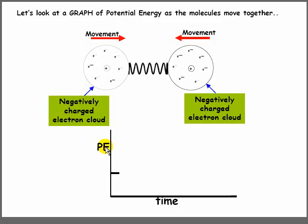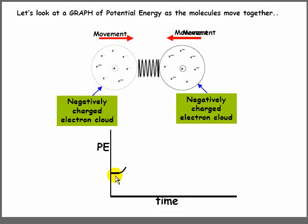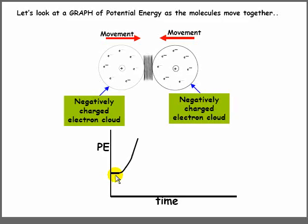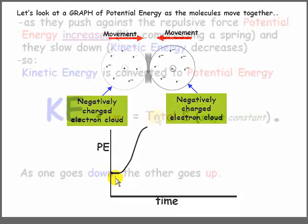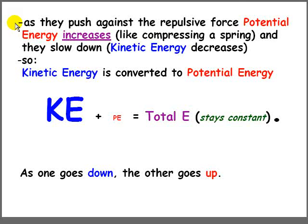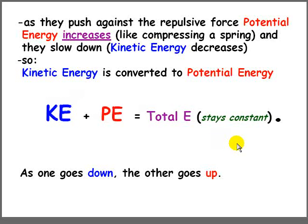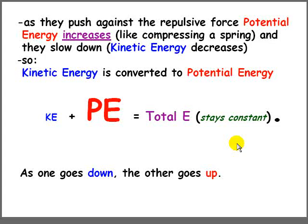If we look at a graph of potential energy versus time, you'll notice when they're far apart, the potential energy is relatively low. As they move closer together, the potential energy increases until it reaches a maximum. As molecules push against each other, the repulsive force and potential energy increases, and they slow down, which means their kinetic energy decreases. We can think of this as kinetic energy being converted to potential energy. As one goes down, the other one goes up.